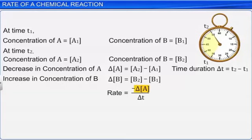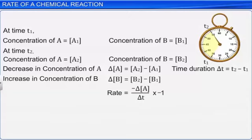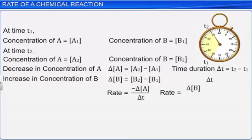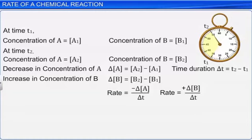Now, delta A is a negative quantity since the concentration is decreasing with time. So we multiply it by minus 1 to make it a positive quantity, as the rate of a chemical reaction is always positive. Similarly, the rate of the given reaction is also given by the increase in the concentration of product B, delta B, divided by time interval delta T. In this case, delta B is a positive quantity since the concentration of the products always increases with time. Hence, we do not multiply the rate of reaction by a minus sign.